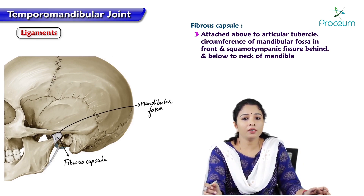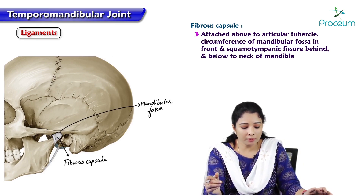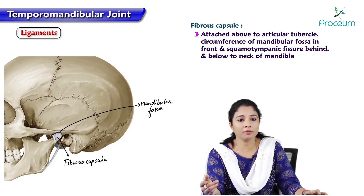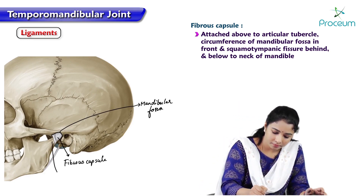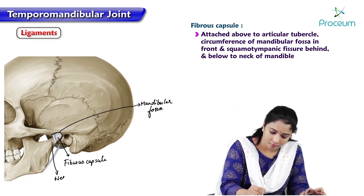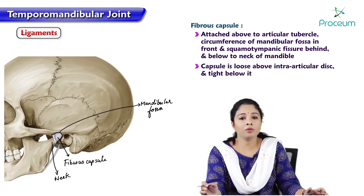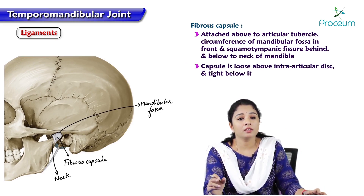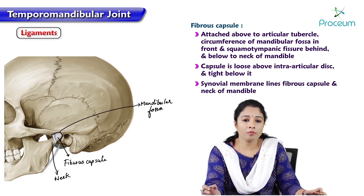Anteriorly the capsule attaches to the mandibular fossa, and posteriorly it attaches above to the squamotympanic fissure and below to the neck of the mandible. The capsule is loose above the intraarticular disc and tight below it. The synovial membrane lines the fibrous capsule and the neck of the mandible.